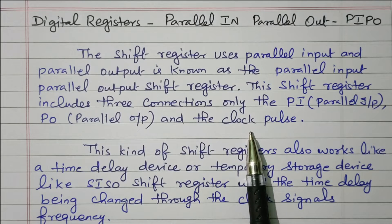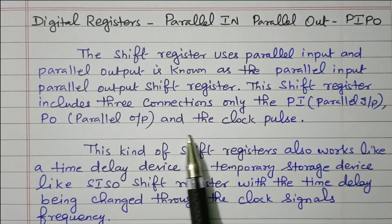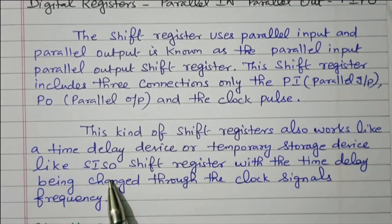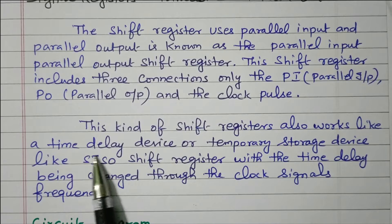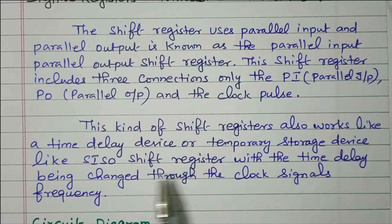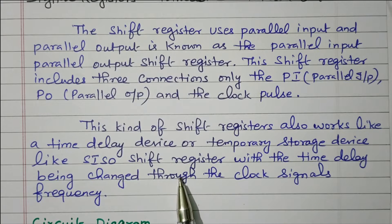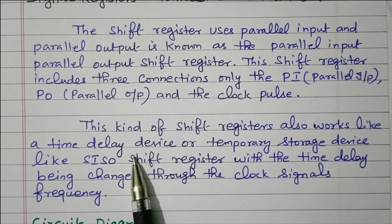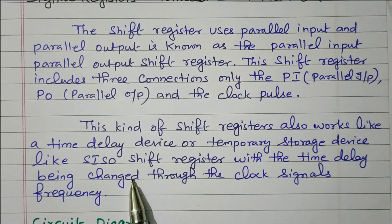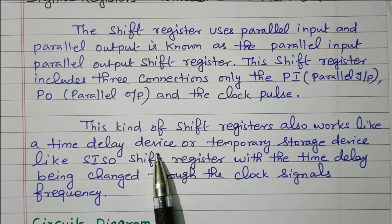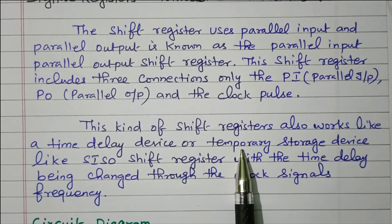The data is given parallelly and taken parallelly, and it also uses clock pulses. This kind of shift register works like a time delay device or temporary storage device, similar to a SISO shift register, with the time delay being changed through the clock signal frequency. So by using the clock pulse, we can make it a time delay device and we can also temporarily store data.